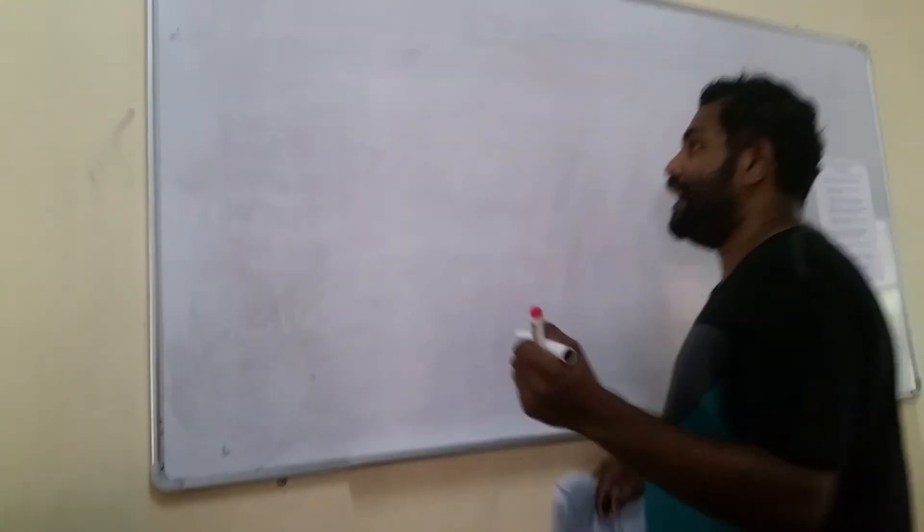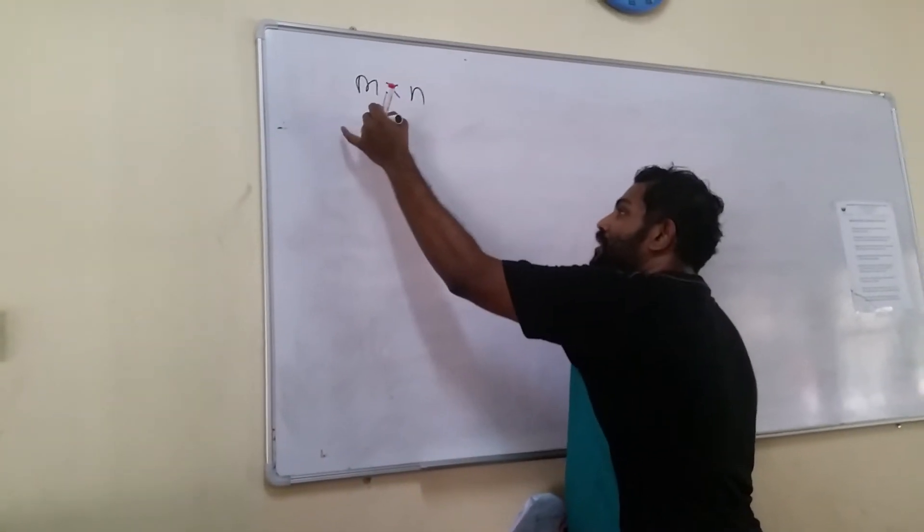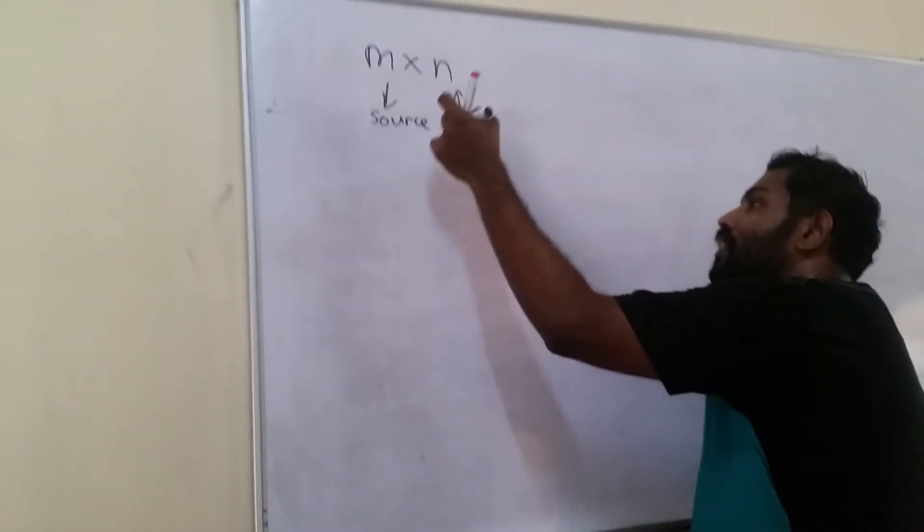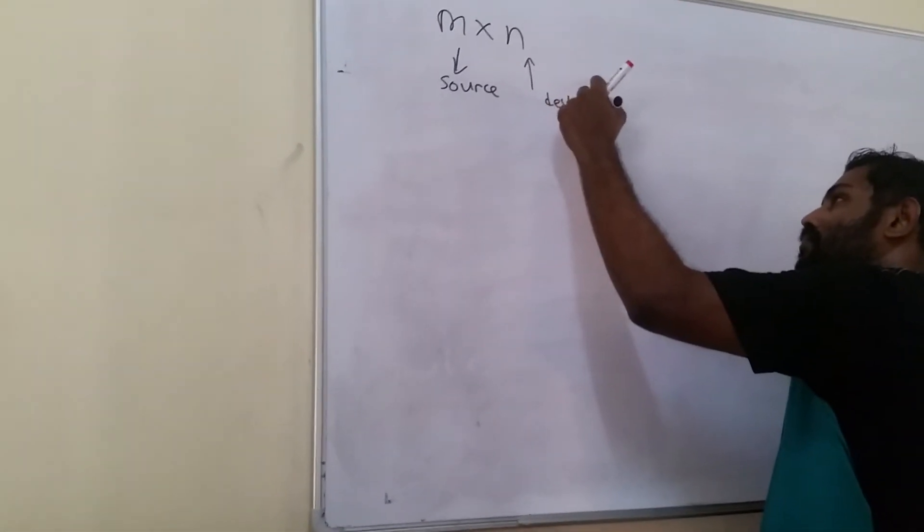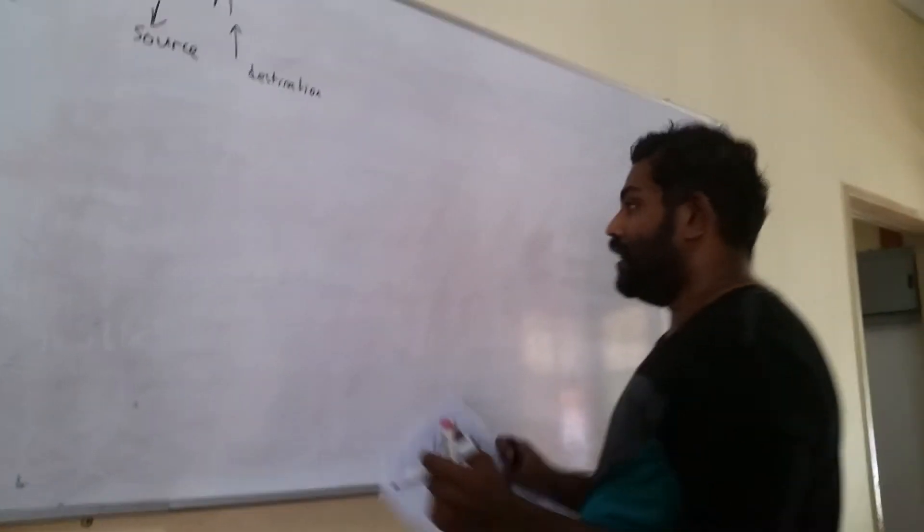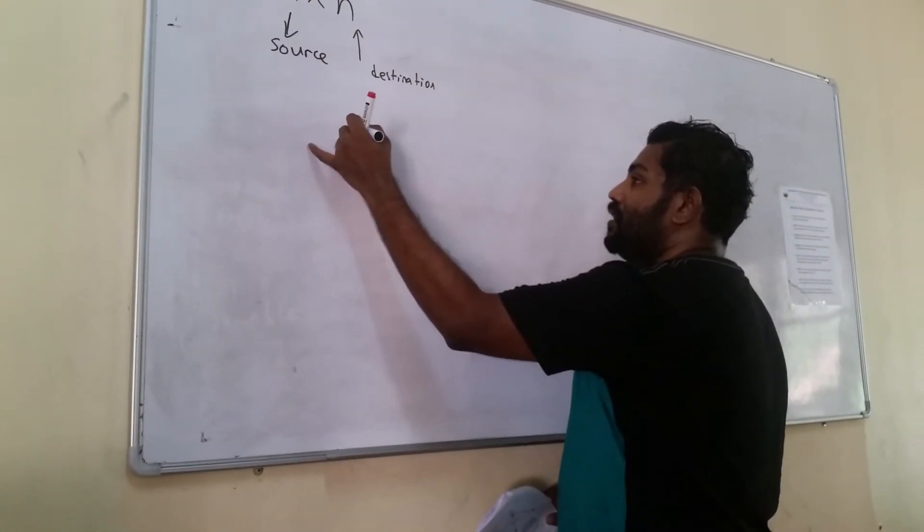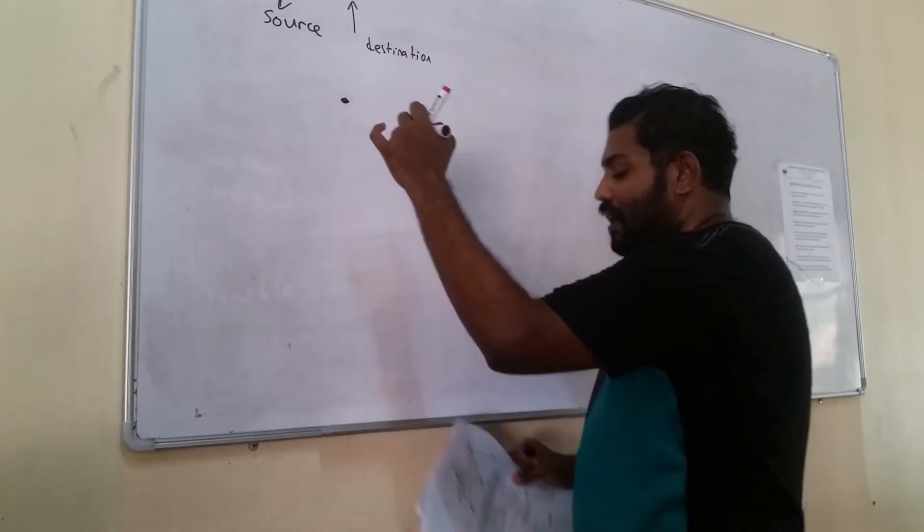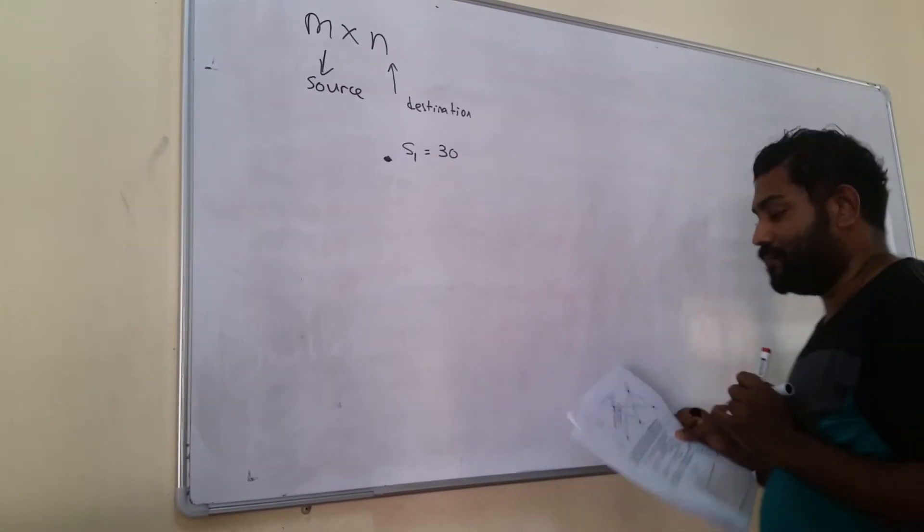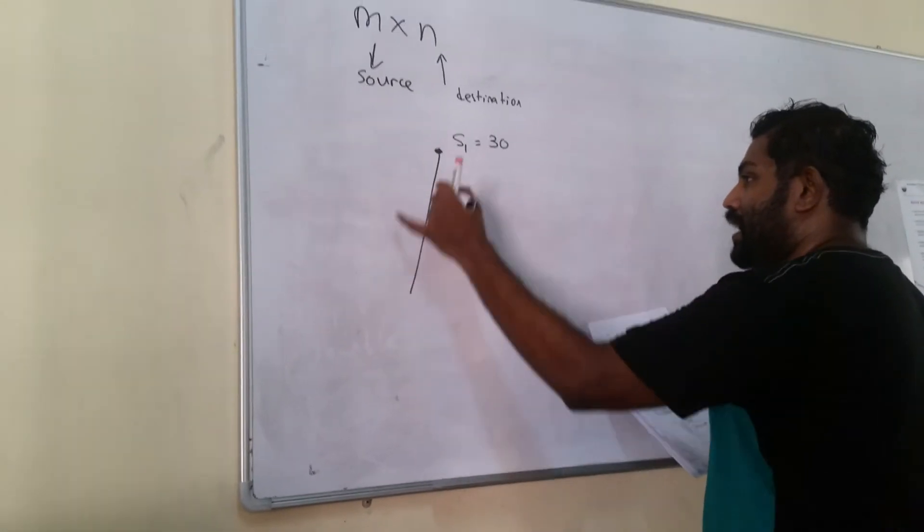So for example, as I explained before regarding m times n, m will refer to source and n will refer to destination. Let's say now we have an example where we have two warehouses. Two warehouses where we can put as S1 which has 30 units of items, and they need to shift this item to three customers.